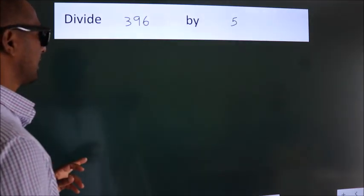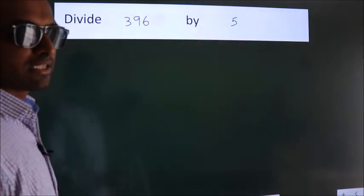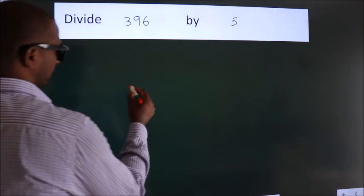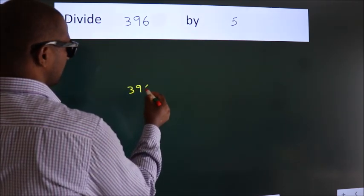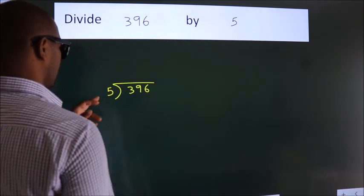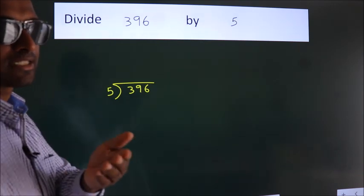Divide 396 by 5. To do this division, we should frame it in this way. 396 here, 5 here. This is your step 1.